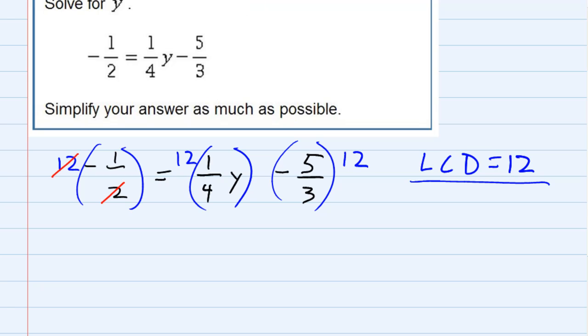So on the right-hand side here, the two goes into 12 six times. Six times that negative one is negative six. On the right-hand side, the first one, four goes into 12 three times. Three times one y is three y. And then the last one here, three goes into 12 four times. Four times a minus five is a minus 20.